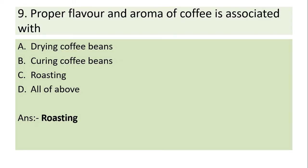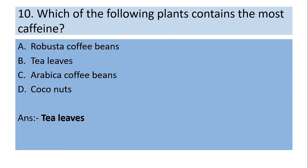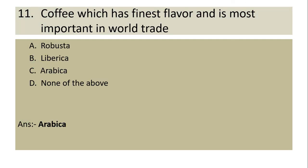Proper flavor and aroma of coffee is associated with — drying coffee beans, curing coffee beans, roasting, or all of the above. Answer: Roasting. Which of the following plants contains the most caffeine — robusta coffee beans, tea leaves, arabica coffee beans, or coconuts? Answer: Tea leaves. Coffee which has the finest flavor and is most important in world trade — robusta, liberica, arabica, or none of the above. Answer: Arabica.